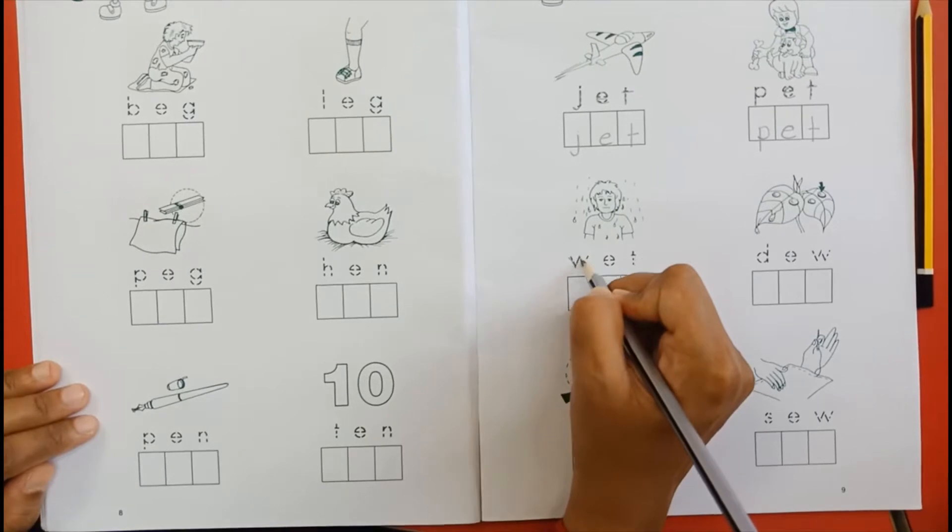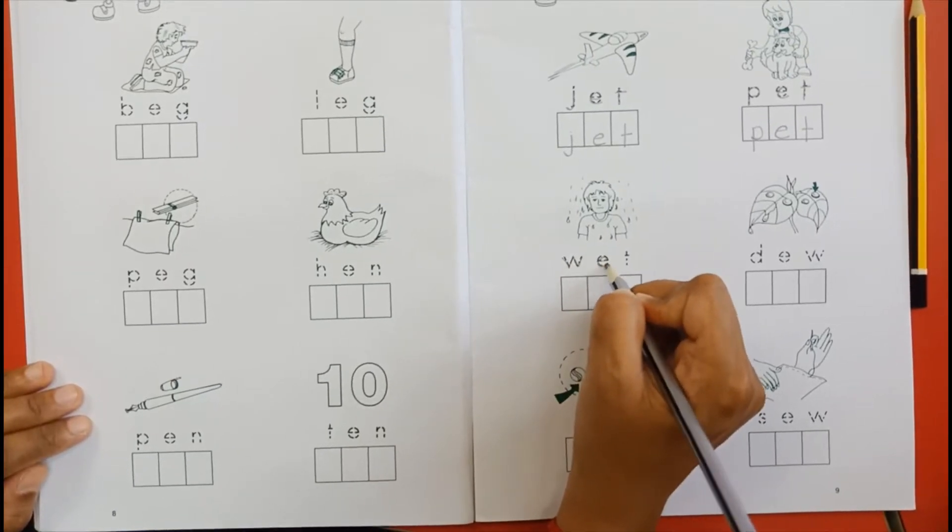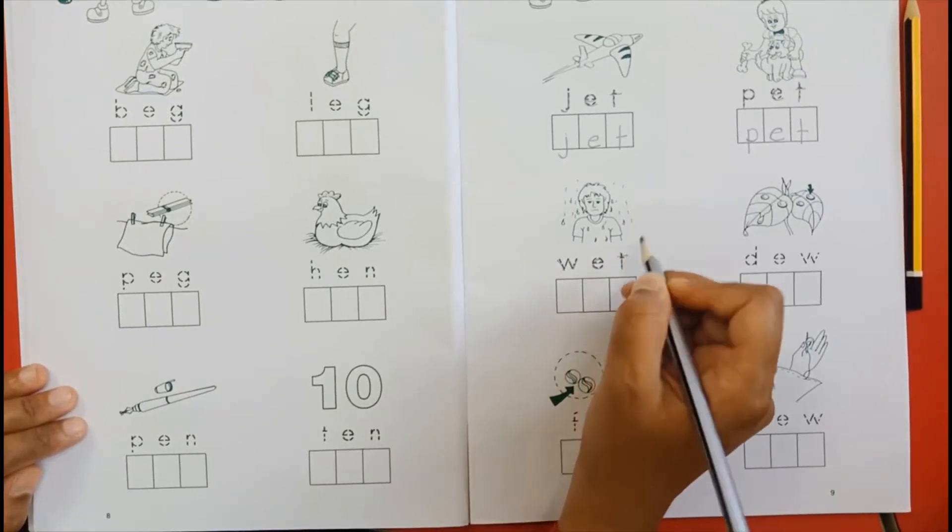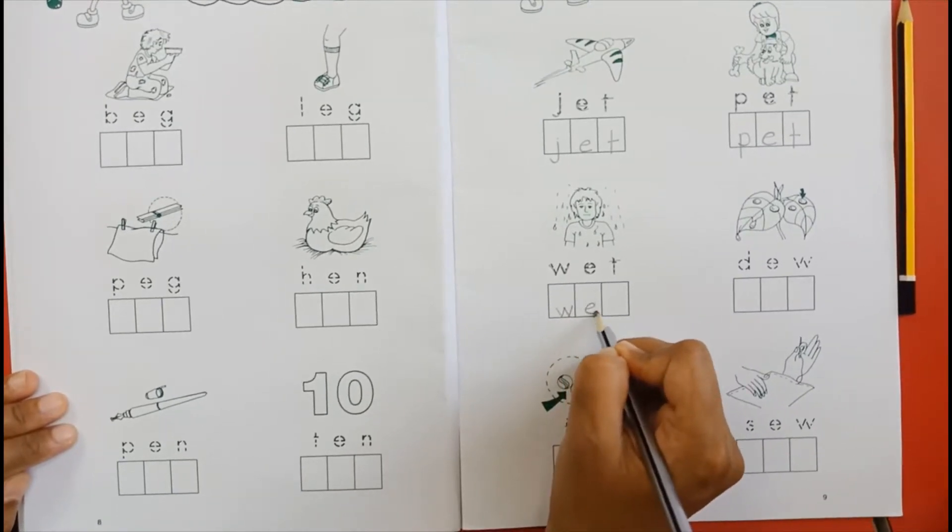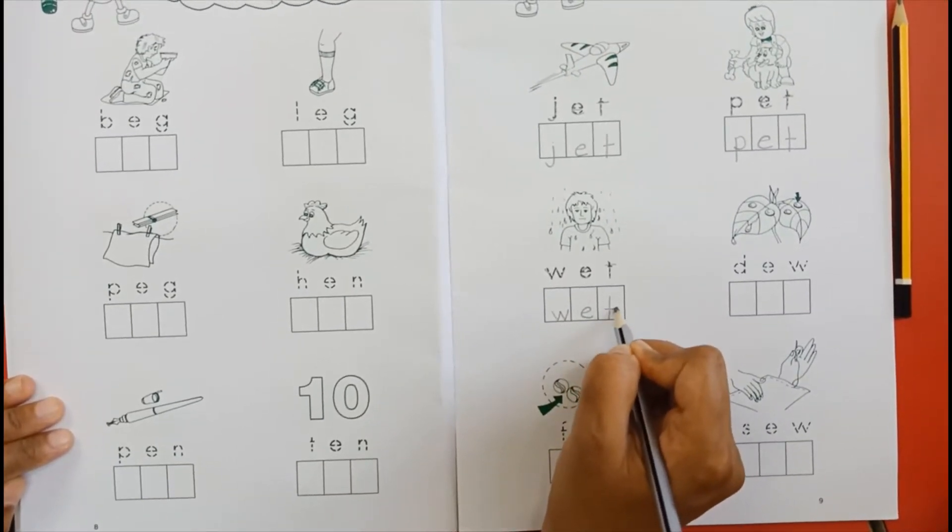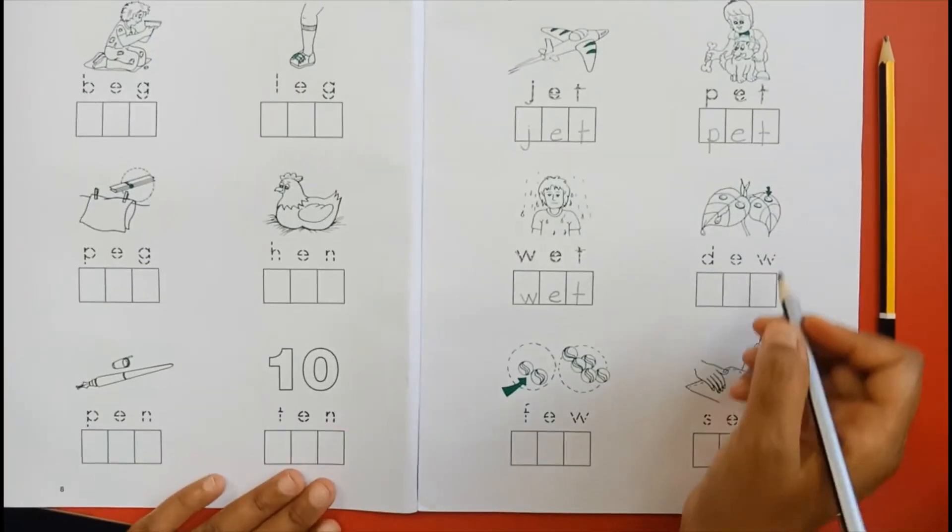W-E-T. Wet. The next word is dew. D-E-W. Dew.